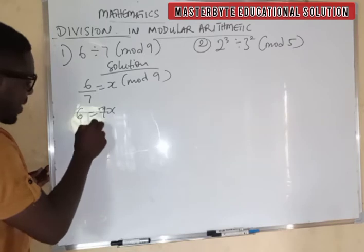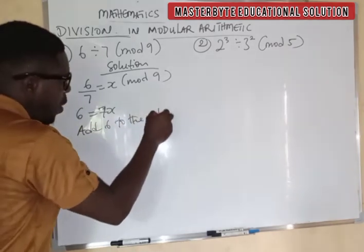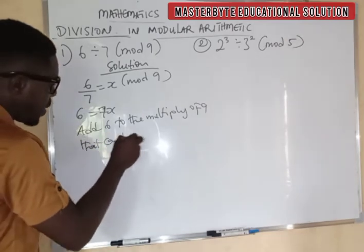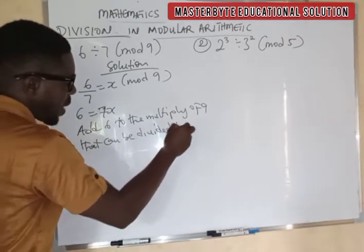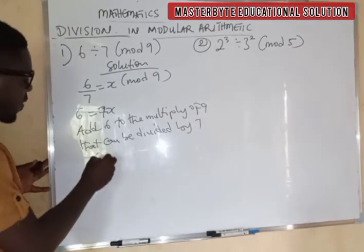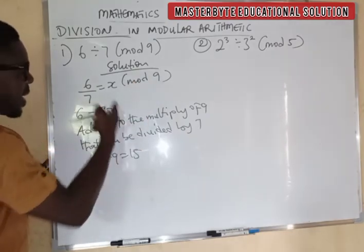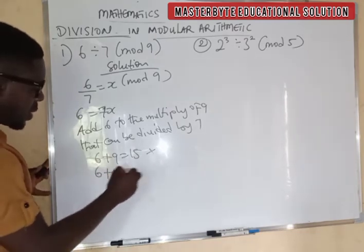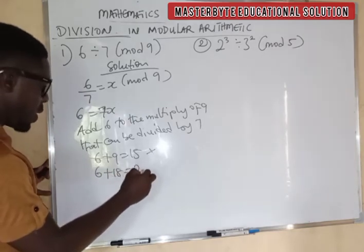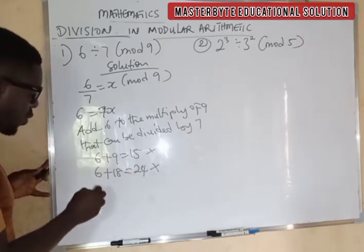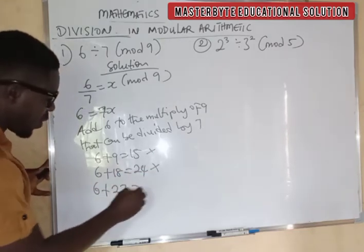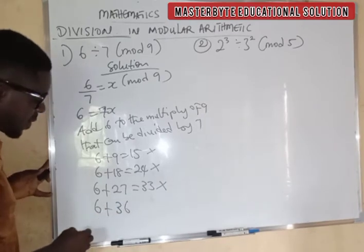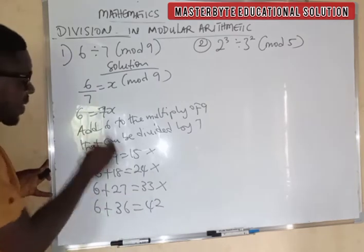Now, the next thing I'm going to do: you add 6 to the multiple of 9 that can be divided by 7. Watch how to do this. We have 6 plus 9 is equal to 15 — can 7 divide 15? No, this is wrong. 6 plus 18 is equal to 24 — can 7 divide 24? No. 6 plus 27 is equal to 33 — can 7 divide 33? No. 6 plus 36 will give us 42. Can 7 divide 42? Yes.